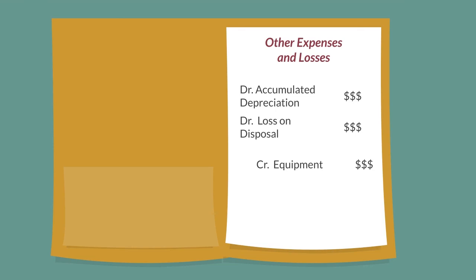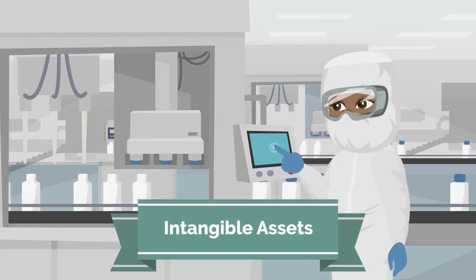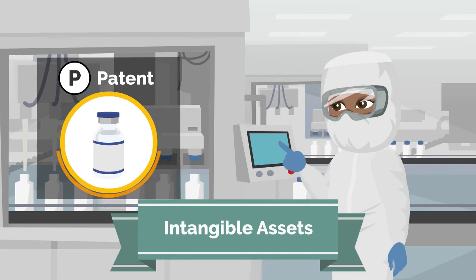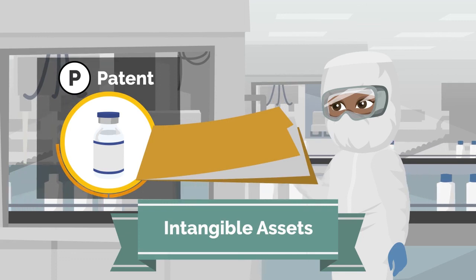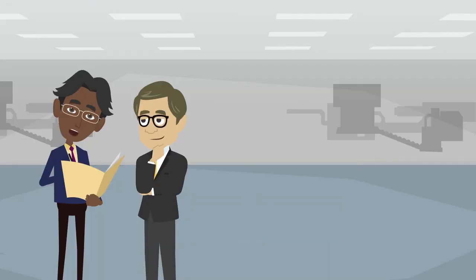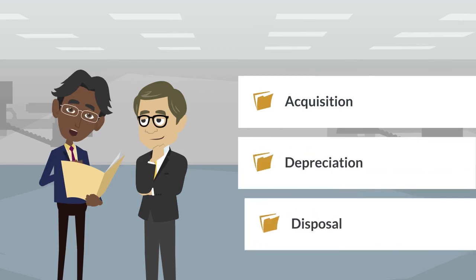Having covered tangible assets, let's think back to companies like Moderna. They not only own tangible assets. We mentioned in the beginning that their intangible assets are also valuable in their own right, which means that they need to be accounted for in our financial statements as well. Although both are assets, there are some differences when it comes to acquisition, depreciation, and disposal.